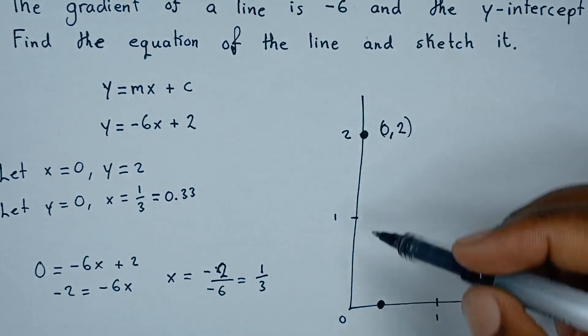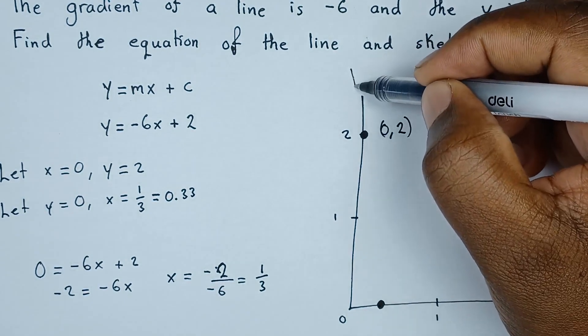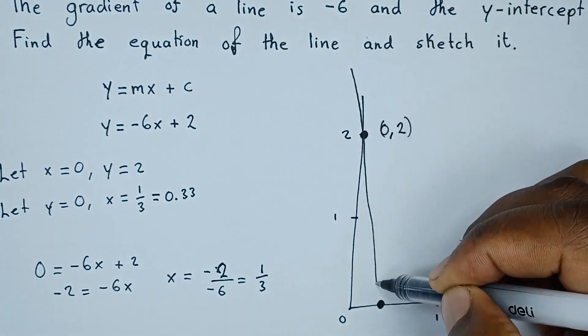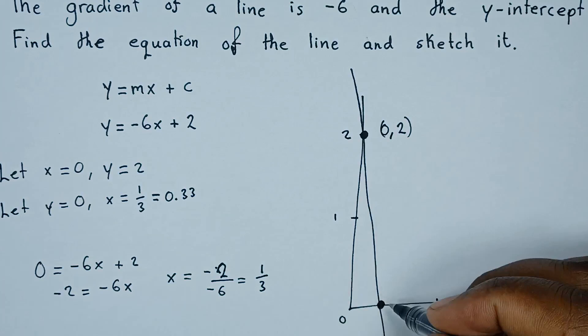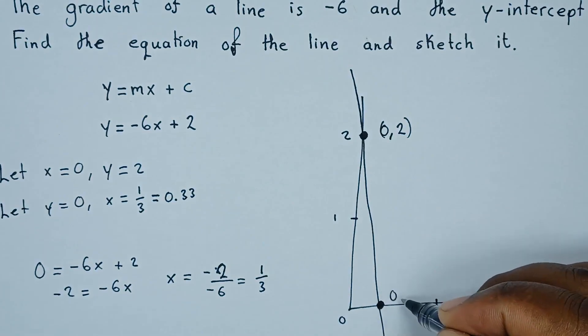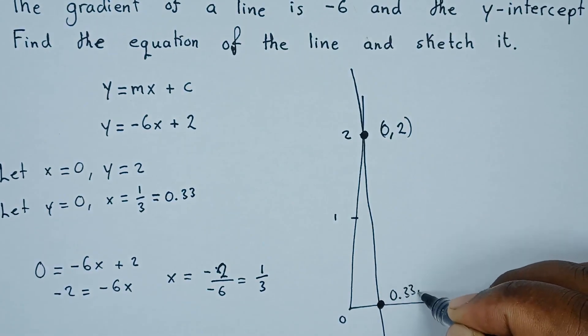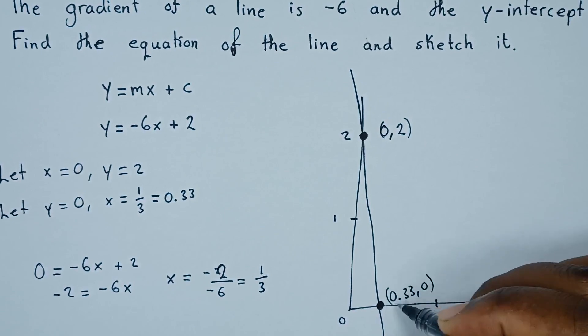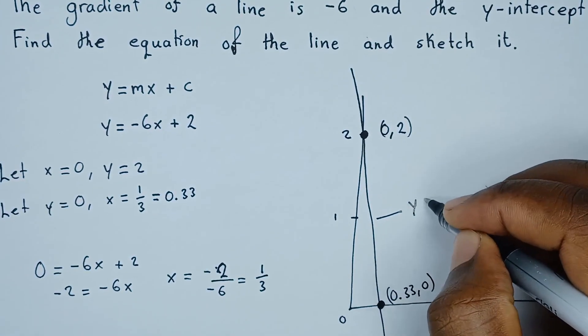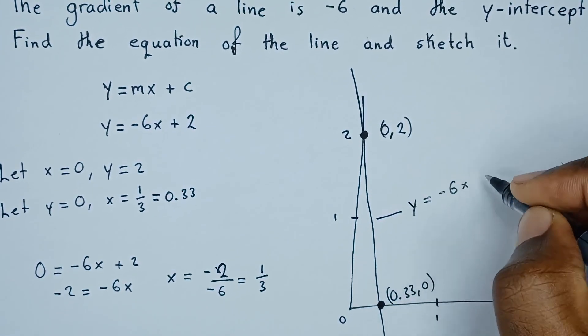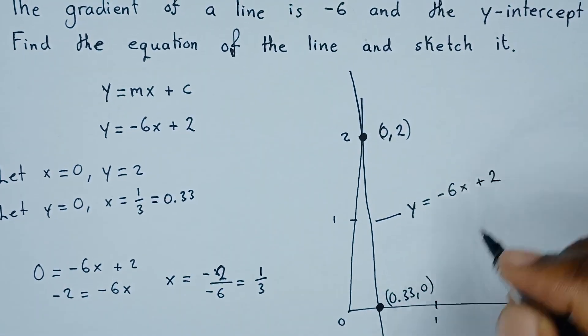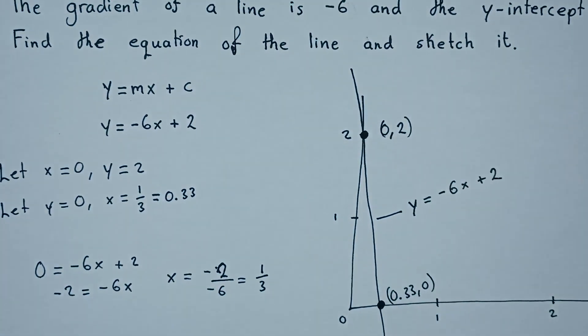So to sketch this, we're just going to draw a line connecting these two points, a straight line like that. So the point here is 0.33 comma 0. So this line is the equation y equals negative 6x plus 2. So there we have it.